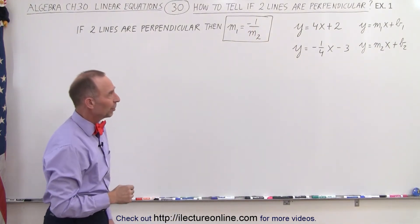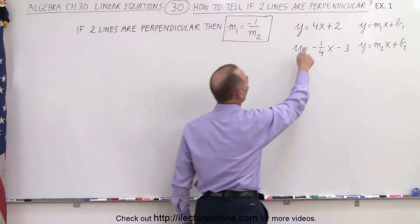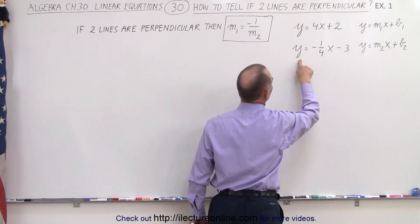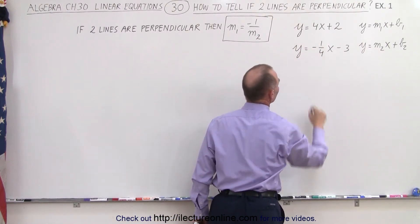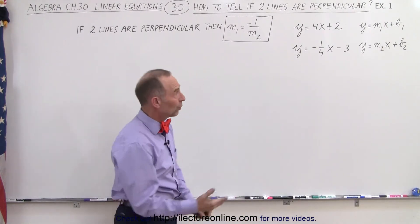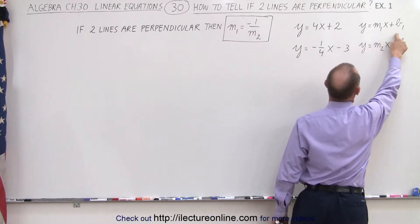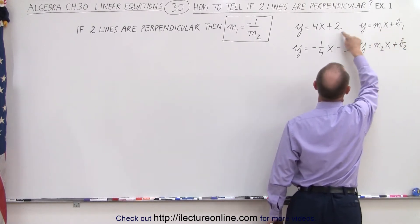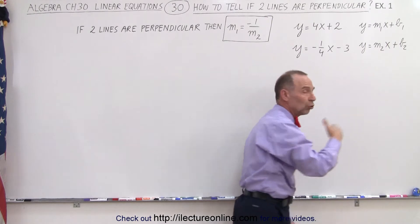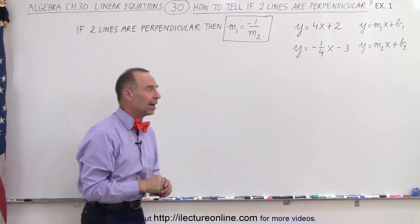So here we have an example. We have two lines: one that is y equals 4x plus 2, another that is y equals minus 1/4x minus 3. Notice we can write those equations in general format, where m1 and b1 are the slope and y-intercept of the first line, and m2 and b2 are the slope and y-intercept of the second line.